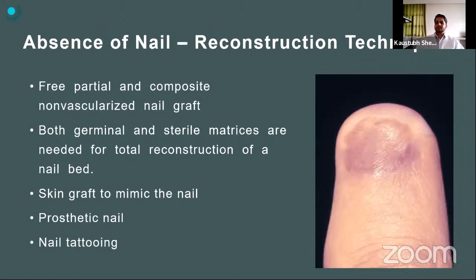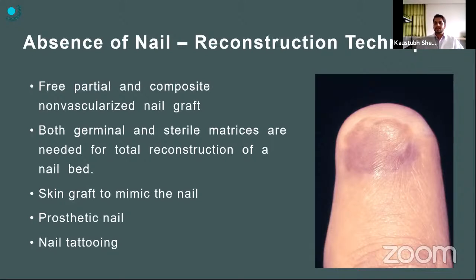In cases where patients come later with total absence of the nail wanting better aesthetic outcomes, either a partial or free graft or a composite graft from the great toe nail bed can be taken — requiring both germinal and sterile matrix for proper nail growth, though this is a very tedious procedure. A simpler solution is applying a skin graft which becomes darker and mimics a nail, or the patient can apply a prosthetic nail or have nail tattooing done.